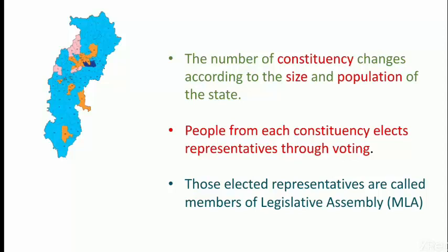The number of constituencies changes according to the size and population of the state. Elections are held, and after the elections, the elected representative — the one who wins from that area — is known as the MLA of that region or constituency. From every constituency we have one MLA, and the MLAs are responsible for the people of their constituency.